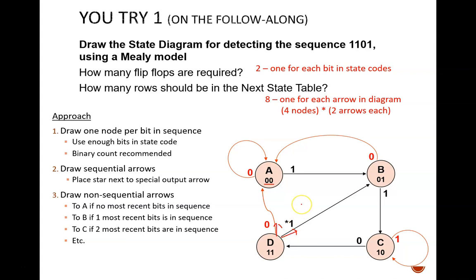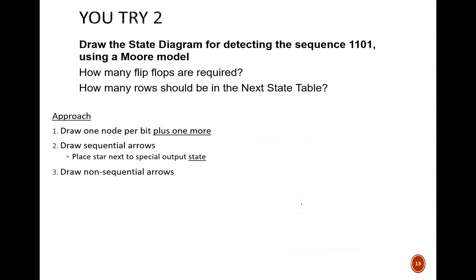Now for the next problem. Here we want to detect the same sequence, but using a Moore model. This causes two changes in our approach. First, there will be one more state than in the Mealy model. So, a 4-bit sequence requires 5 nodes. Second, the special output star will be placed on the final node, rather than next to an individual arrow. Go ahead and try this on your own. Pause the video while you do.